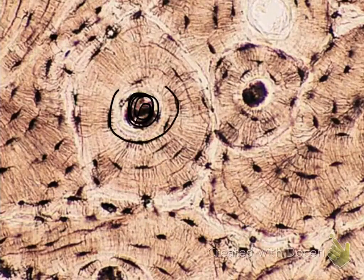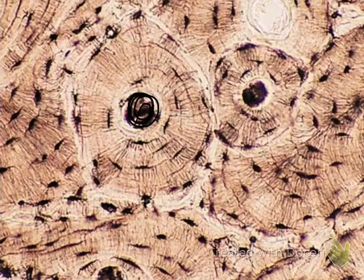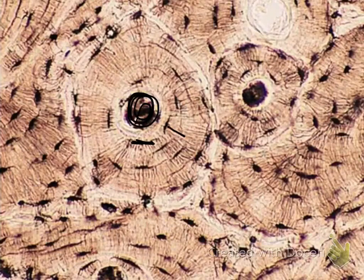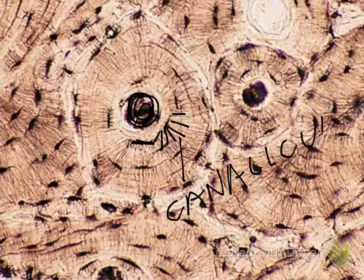One of these distinct layers is called lamellae, which means layers. Within those layers are these dark areas. They contain the bone cell, which is called the osteocyte, in the space called lacunae. The tiny channels connecting each of the osteocytes are called canaliculi.